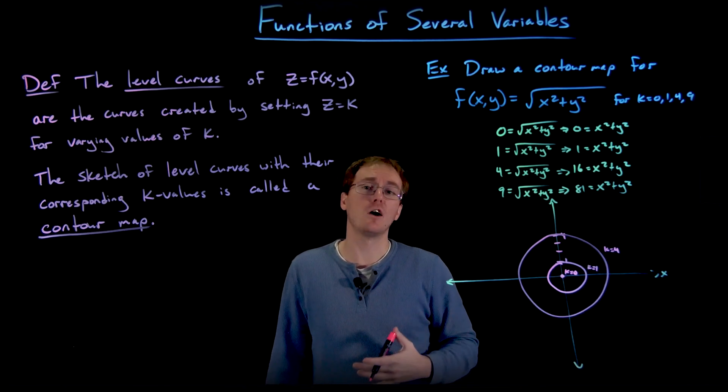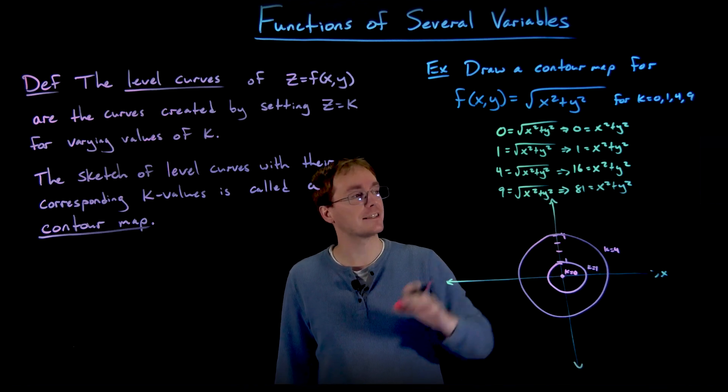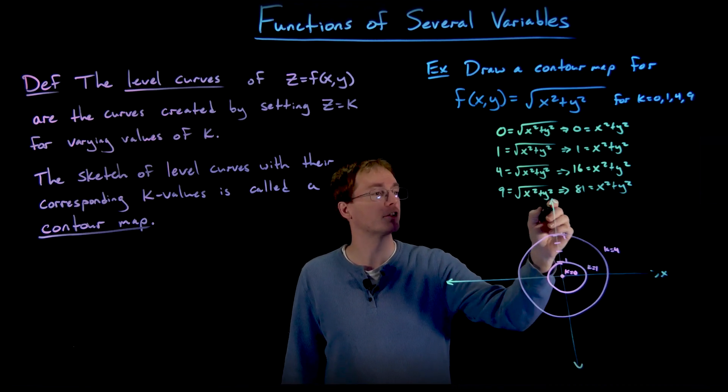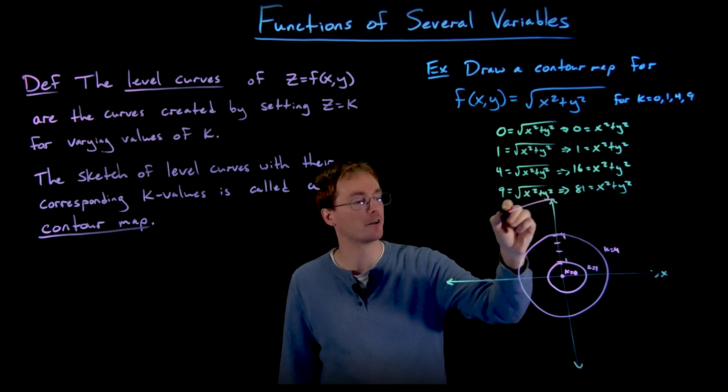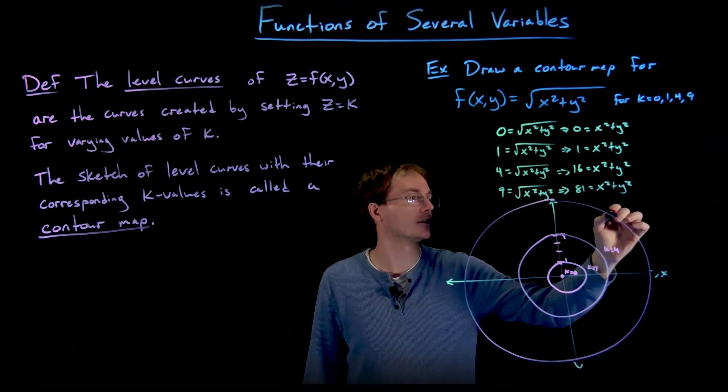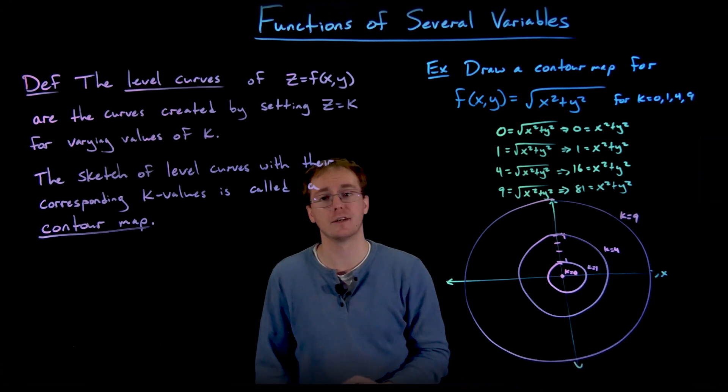And so if we finish our contour map off by plotting this last level curve, which gave us the equation 81 = x² + y², that'll give us a circle of radius 9, which will be hard to fit on here, but should look something roughly like this. And this corresponded to when k was equal to 9.